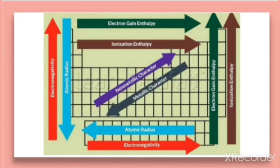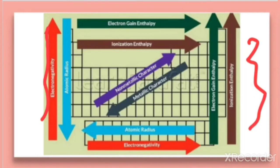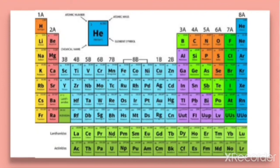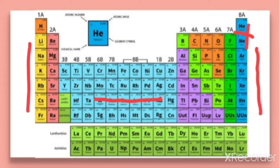Therefore, elements on the extreme left and extreme right — except noble gases — show high chemical reactivity, while elements in the center show moderate reactivity. In summary, elements at both extremes of the periodic table show the highest chemical reactivity, and reactivity is lowest in the center.